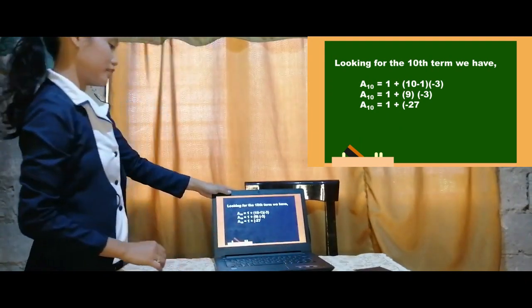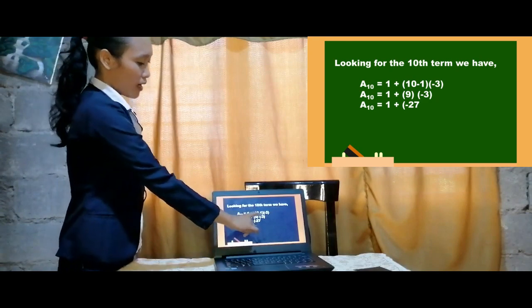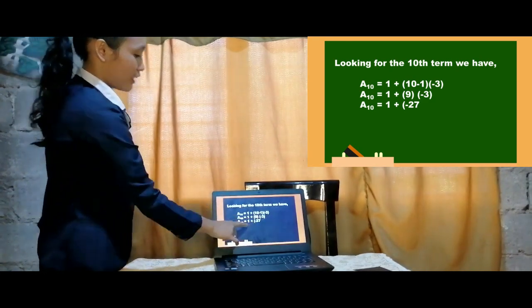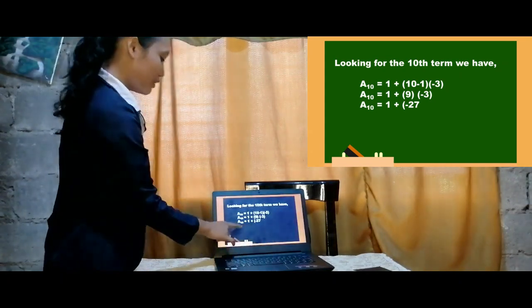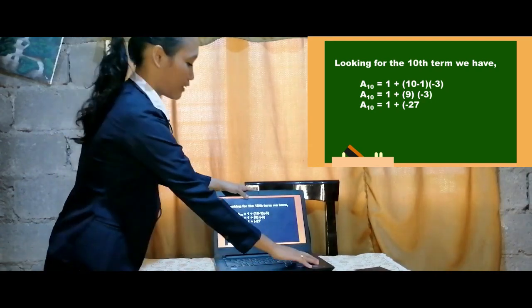Looking for the 10th term. We have a sub 1 is 1, 10 minus 1, d which is negative 3. What is the a sub 10? 1 plus negative 27 is equals to negative 26.